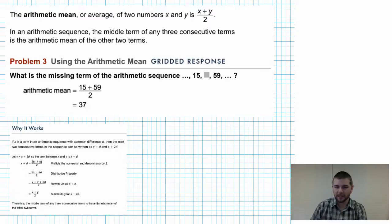Well, according to what we saw above, that middle term is just going to be the arithmetic mean or the average of 15 and 59, the two terms immediately before and after it.